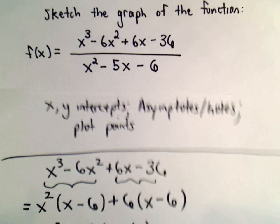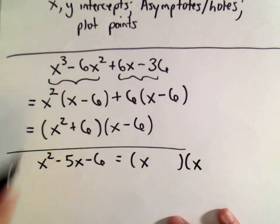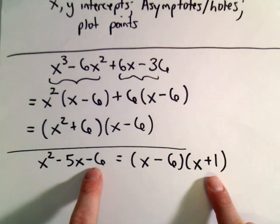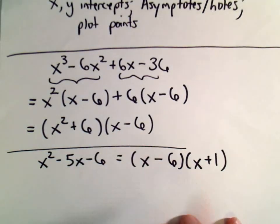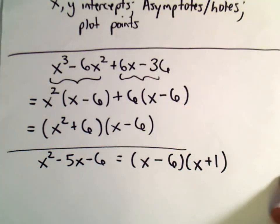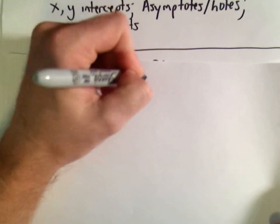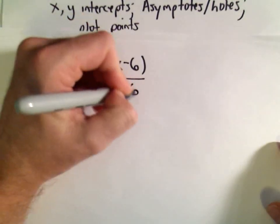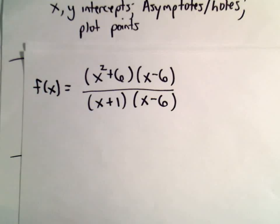To factor the denominator, x squared minus 5x minus 6, I'll use negative 6 and positive 1: they multiply to negative 6 and add up to negative 5. Notice there's an x minus 6 factor in the numerator anyway, so it's not surprising there's one in the denominator — that's how we'll get our hole in the graph. So our function can be rewritten as x squared plus 6 times x minus 6, over x plus 1 times x minus 6.